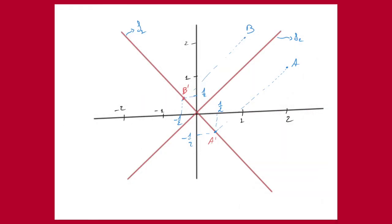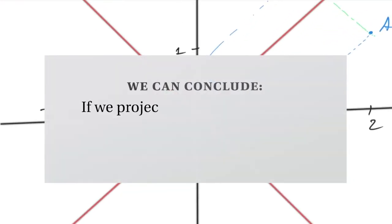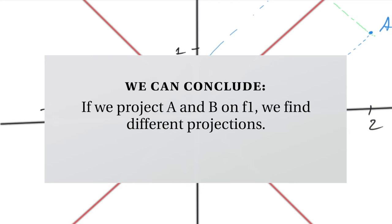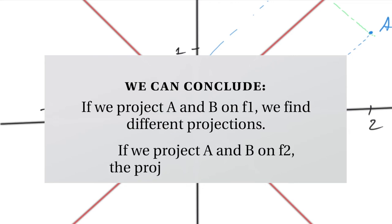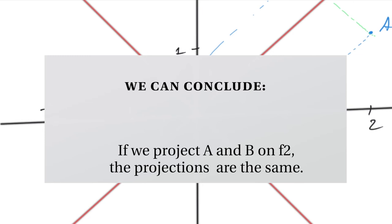Here I have plotted the projections A prime and B prime on F1. A prime is here, B prime is here. If we now do the same projection onto F2, we find that A and B will give the same orthogonal projection. So if we project A and B on F1, we find different points A prime and B prime, but if we project them on F2, we find the same point for both.